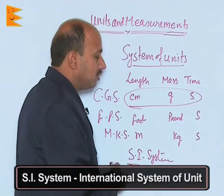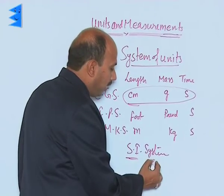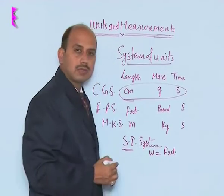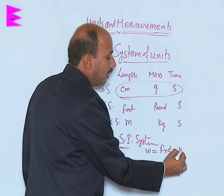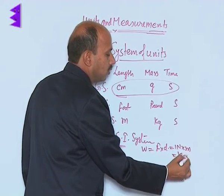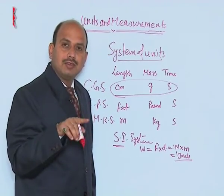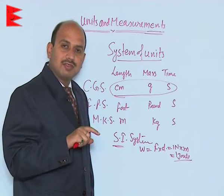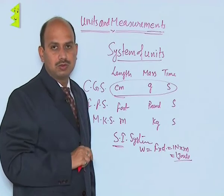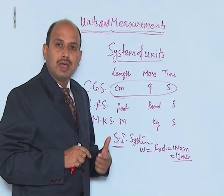For example, if you have taken work, you know work is equal to force into distance, that can be written as 1 Newton into meter, and this is equal to 1 joule. So the unit of work is 1 joule, and unit of energy is also measured in joule. In SI system, all types of energies are measured in joules, and it is actually the modified form of the MKS system.